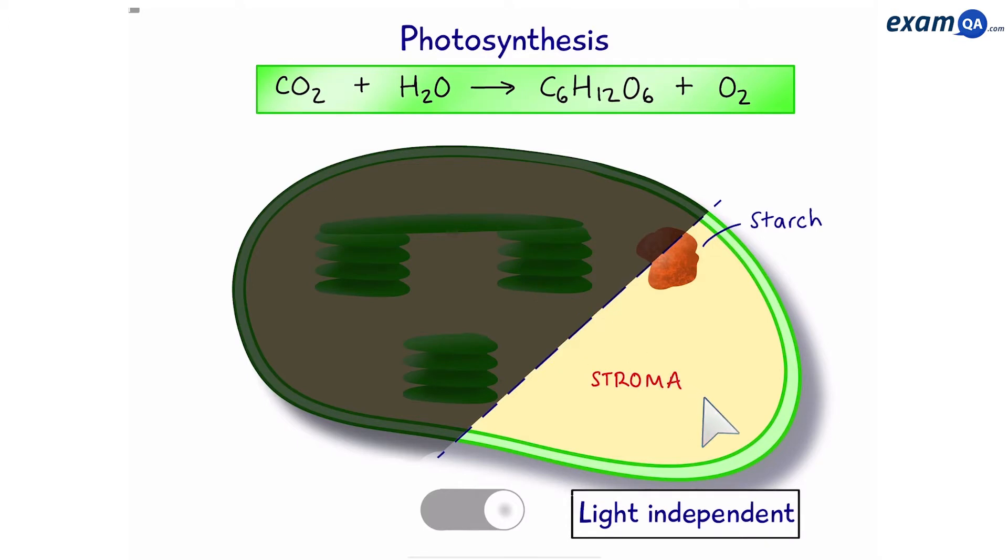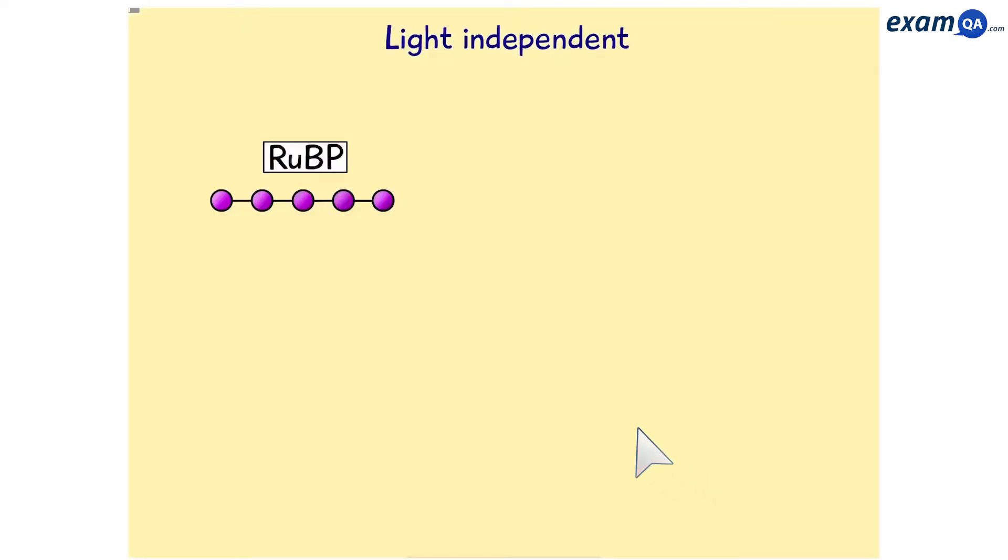This happens in the stroma. We have a cycle in which carbon dioxide comes in from the air. ATP and NADPH come from the light-dependent stage. Together, they create glucose. So, let's see what happens.